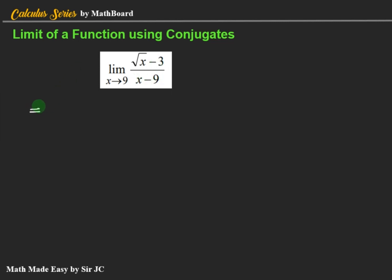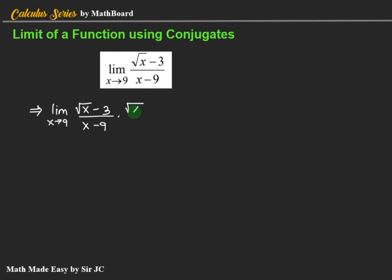So we can evaluate by multiplying the numerator and the denominator by the conjugate of the numerator. We have (√x − 3) / (x − 9). The conjugate of the numerator is simply √x + 3, and we multiply it to both the numerator and the denominator.